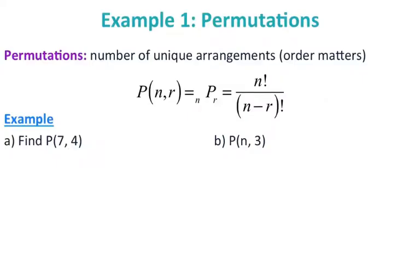Calculating permutations is very similar to calculating combinations, which we did with the binomial theorem. But first, let's look at the definition of a permutation: it's the number of unique arrangements where order matters. That's very important because later we'll also look at combinations again, where order does not matter. So for permutations, order matters.